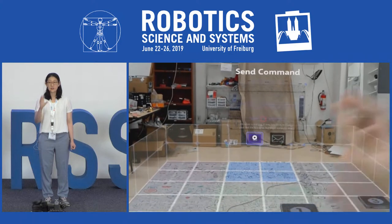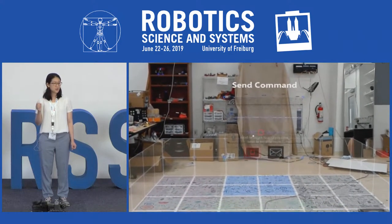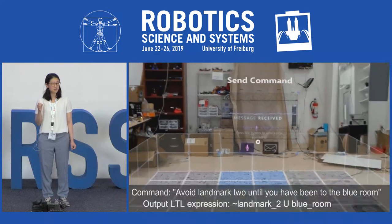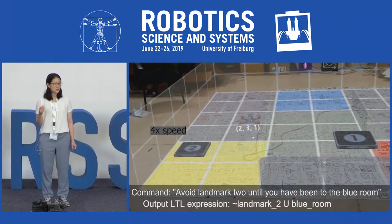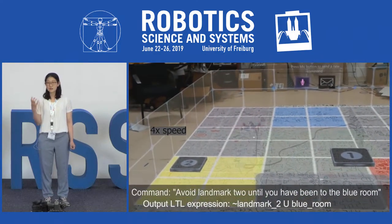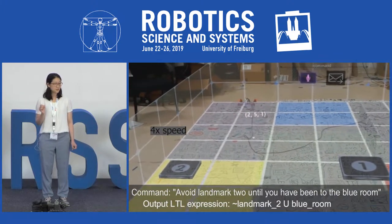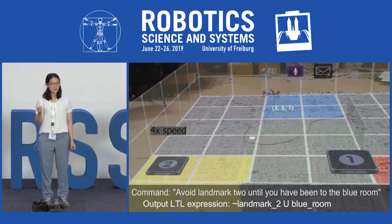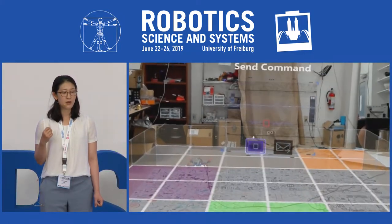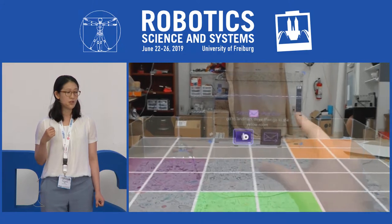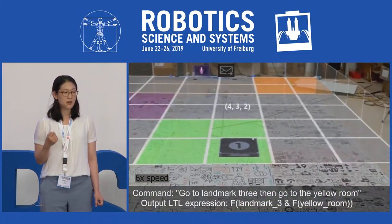In this video, we click a button using a gesture and give the command 'avoid landmark 2 until you have been to the blue room.' You can see the robot understands the language command and then goes to the blue room. We also give another language command to go to landmark 3, and then go to the yellow room, and it also works well.